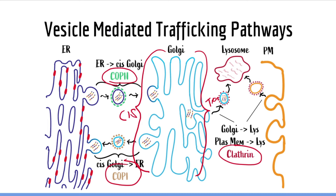Once proteins with the appropriate targeting molecules reach the Golgi, they are further modified, matured, and prepared for secretion via exocytosis. Exocytosis is the process by which vesicles fuse with the plasma membrane in order to release their contents into the cell exterior. What you need to know is that there are two pathways of protein secretion: constitutive secretion and regulated secretion.